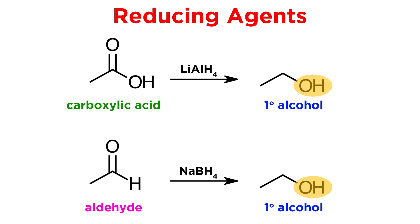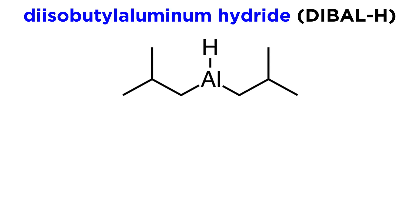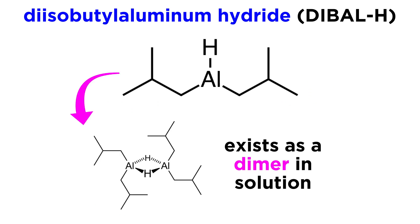In fact, there is such a reducing agent, so let's learn about it now. Diisobutyl aluminum hydride, abbreviated thusly, looks like this, and typically exists as a dimer in solution.